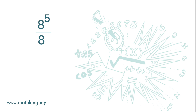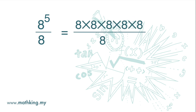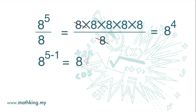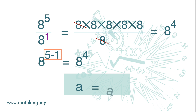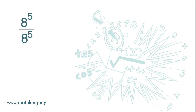For the next question, 8 to the power of 5 divided by 8, it can be written out in full. We cancel out one 8 above and one 8 below and we are left with four 8s above, so the answer is 8 to the power of 4. In index notation it is 8 to the power of 5 minus 1, because the single 8 here is actually 8 to the power of 1.